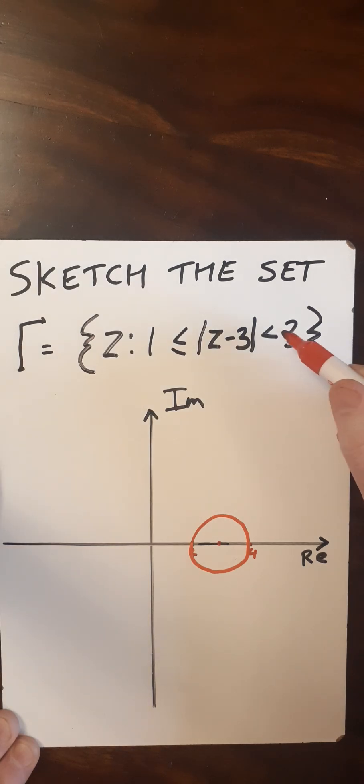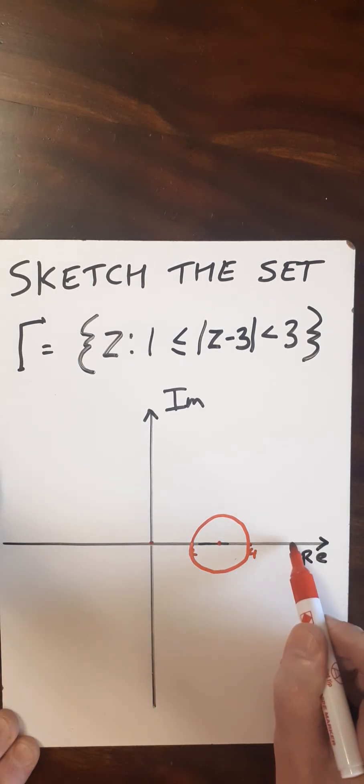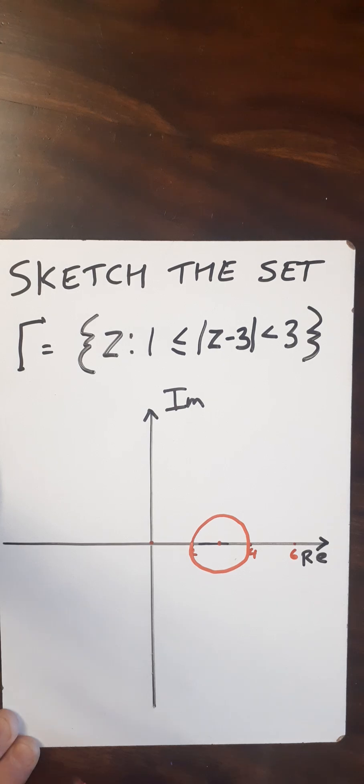Now here I've got less than, but not equal to three. So from this point three here, that's going to go to the origin and go out to six. So I'll mark that on there.